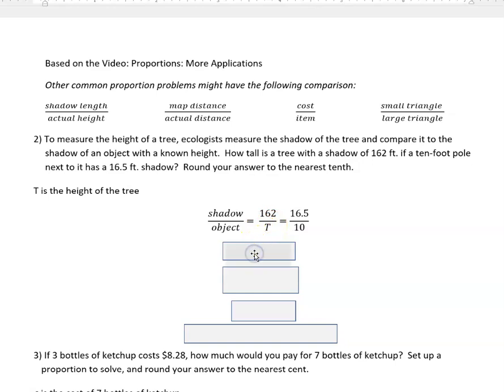To solve this, I'm going to cross multiply by multiplying diagonally across. 16.5 times t gives me 16.5t and 162 times 10 gives me 1620. To simplify from here, I'm going to divide both sides by the coefficient, which is 16.5. I do that to both sides, and 16.5 cancels itself out here to 1, leaving just t, and then I just have to divide the other side on my calculator to see that I get 98.18 repeating.